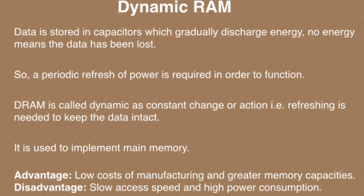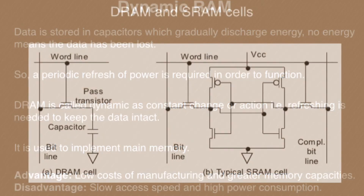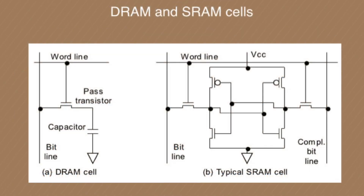Now let's see how these cells look. A DRAM cell consists of one transistor plus one capacitor, and based on the bit line and word line, it will decide which data to store.